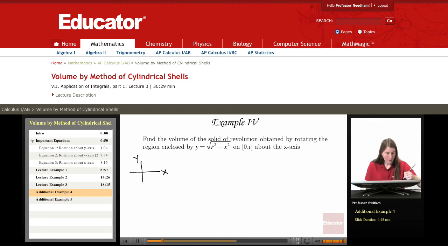We have y equals radical r squared minus x squared giving us this portion of a circle. It's being rotated about the x-axis and we're again looking at a half sphere.